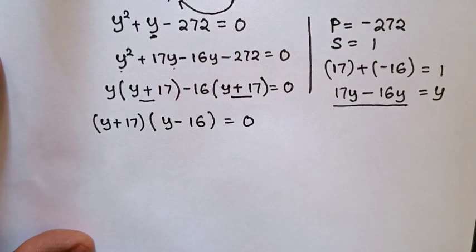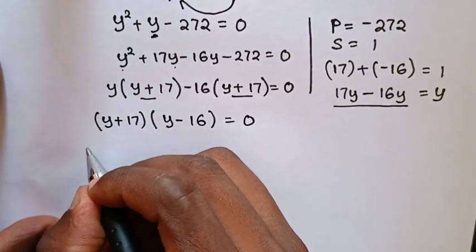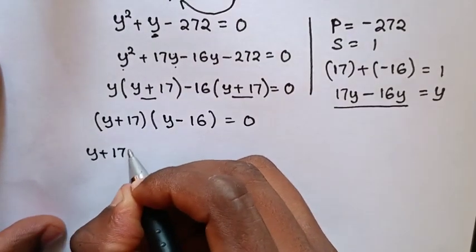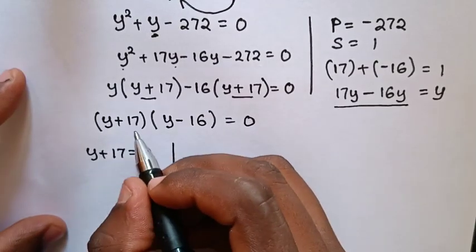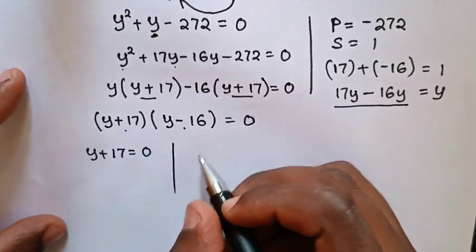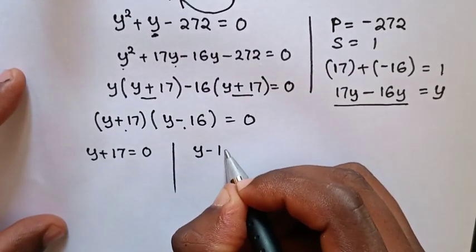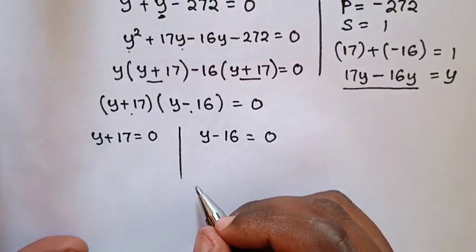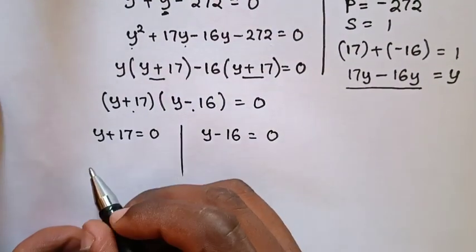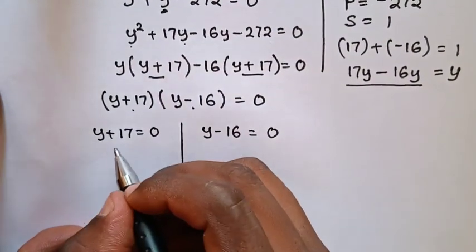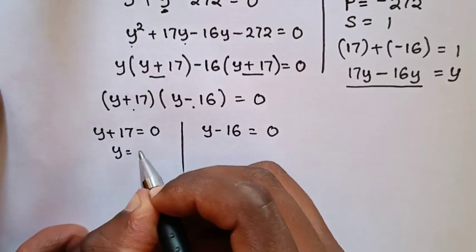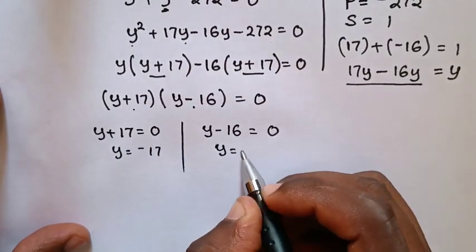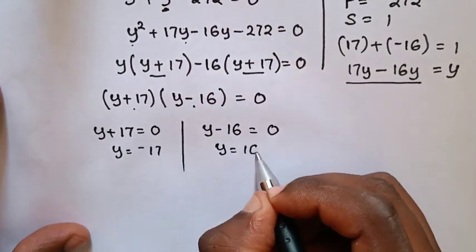We have two cases: y plus 17 equals 0, giving y equals negative 17; and y minus 16 equals 0, giving y equals 16.